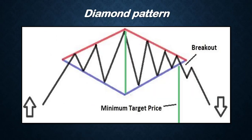A diamond pattern is used for detecting reversals. Once rightly identified, it is the most profitable pattern for using reversals in a trading strategy. The diamond chart pattern is a rare pattern that looks similar to the head and shoulders pattern with a V-shaped neckline.